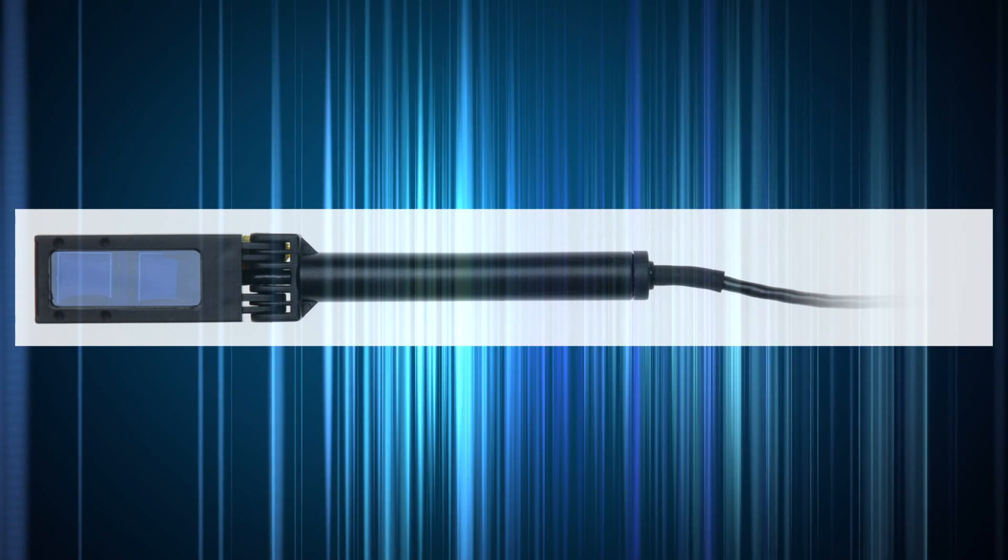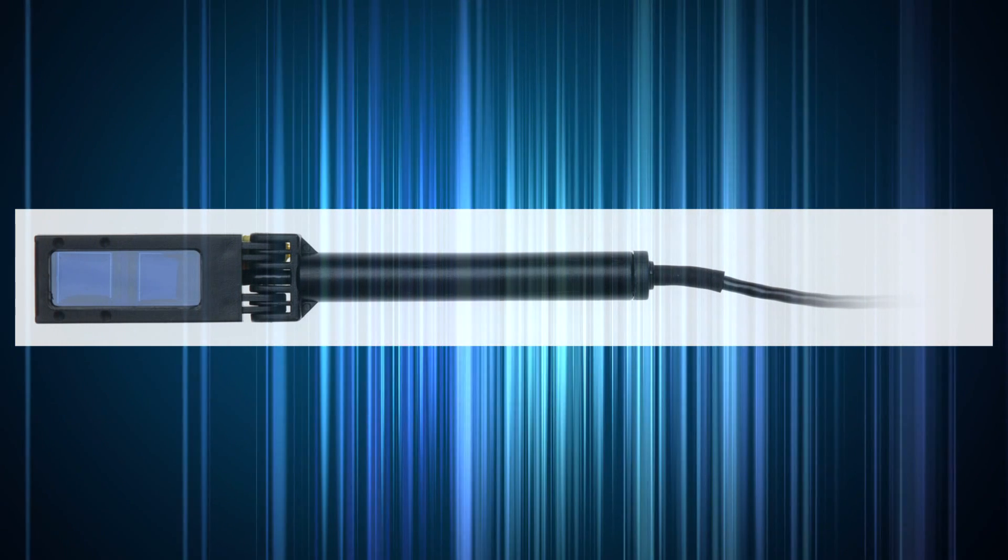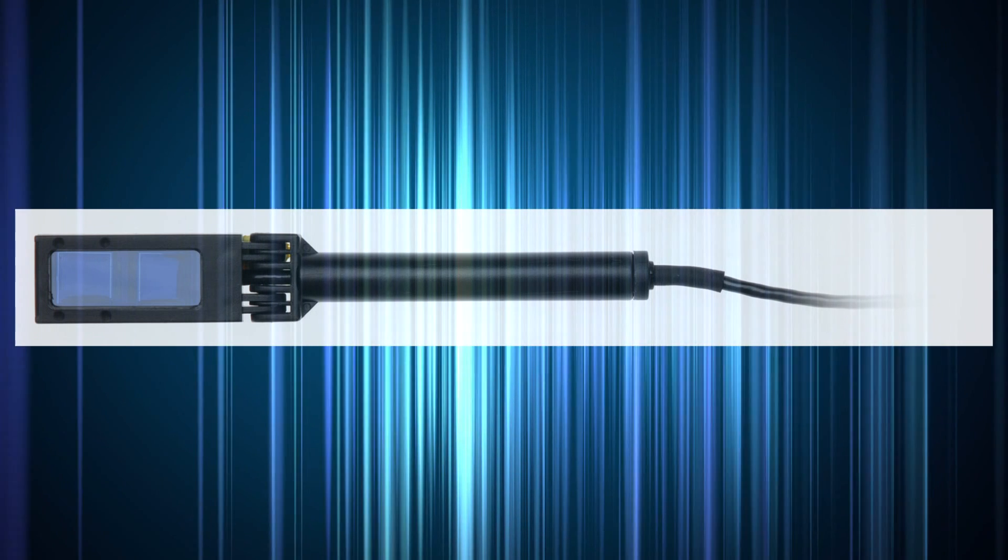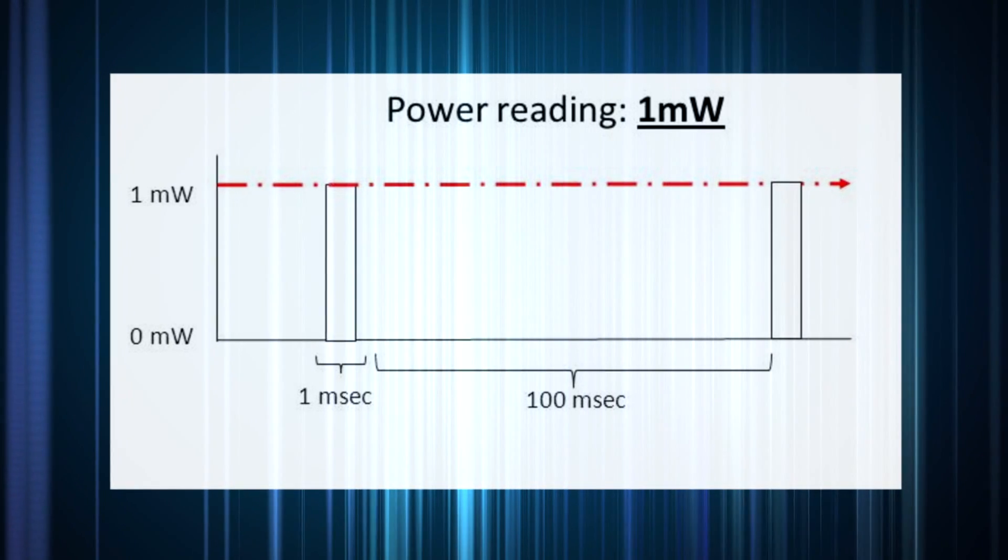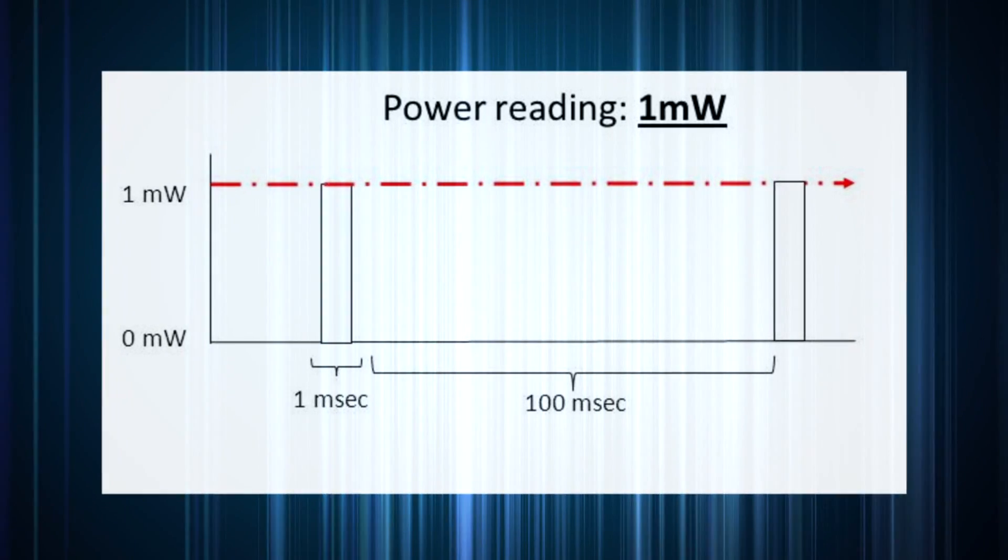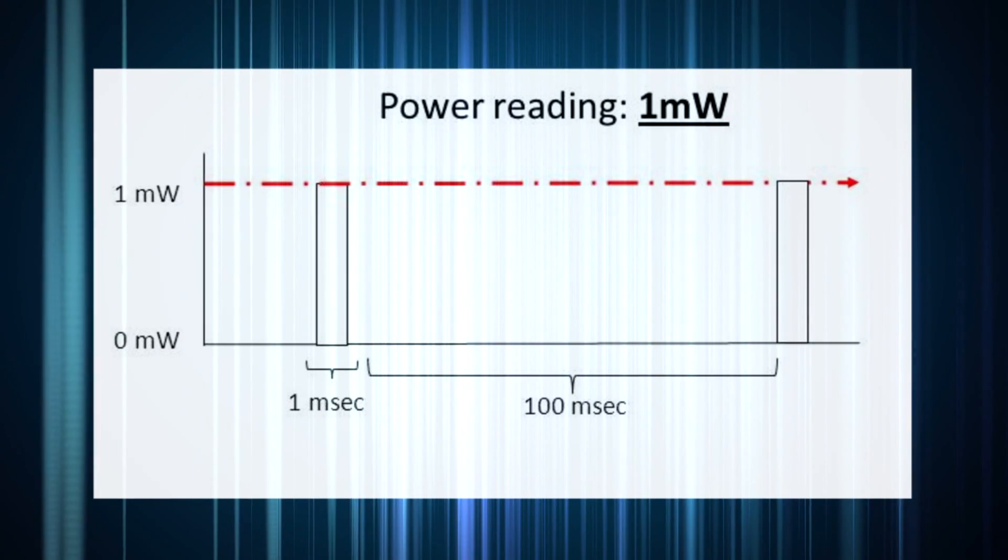The highest value measured during the measurement period is held and displayed on the meter. In the example we just saw, the sensor will hold on to the peak reading of 1mW and display that as the true power in the beam.